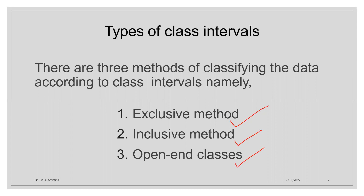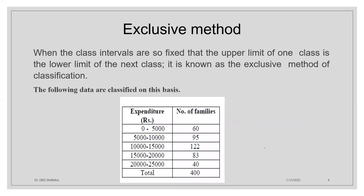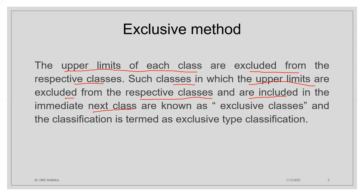We will try to understand what is the exclusive method, what is the inclusive method, and what is the open-ended classes. Now we need to understand the exclusive method. Exclusive method means the upper limits of each class are excluded from the respective classes. Such classes in which the upper limits are excluded from the respective classes and are included in the immediate next classes are known as exclusive classes, and the classification is termed as exclusive type classification.